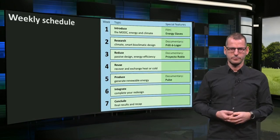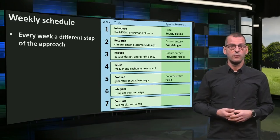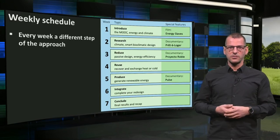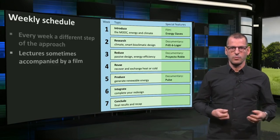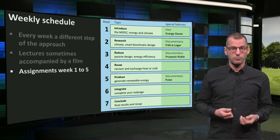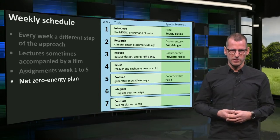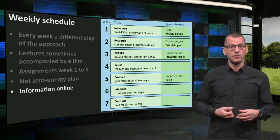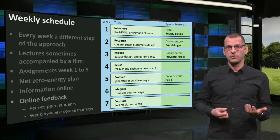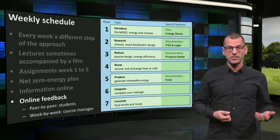Here you see the schedule of the MOOC. In the column on the left you see the week, step and topics, and on the right you see special features we offer during certain weeks. Every week we discuss another step of the approach, and you will be asked to work on this step at home. We will offer lectures to teach essential knowledge, and in some weeks we will also have a special film. You will get assignments from week 1 until week 5, and finally you will have to complete your net zero energy plan in week 6. Next to the lectures we will offer online educational material. As students you will be able to help one another through the online forum, and week by week we will pick interesting results or essential things to discuss.